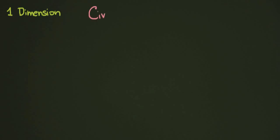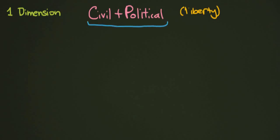In the last lesson we talked about the many dimensions of human rights, and in this lesson we're going to go back to the first dimension and dive in a little bit deeper. The first dimension of human rights are civil and political. This means that these rights have to do with our liberty. Civil and political rights are considered negative rights.